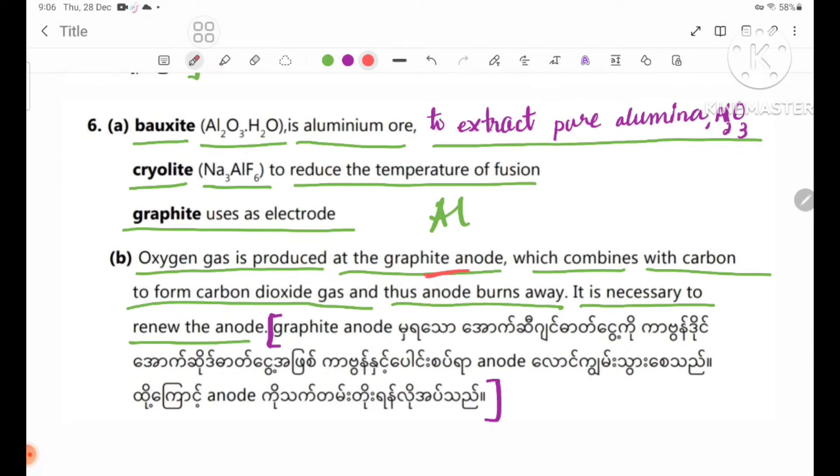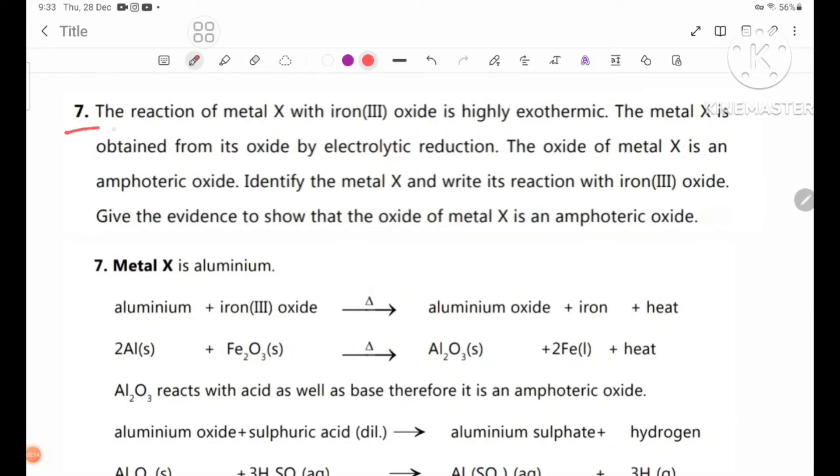Number seven: The reaction of metal X with iron(III) oxide is highly exothermic. The metal X is obtained from its oxide by electrolytic reduction. The oxide of metal X is an amphoteric oxide.